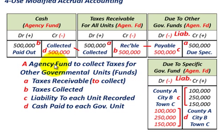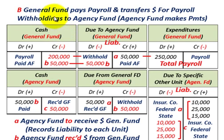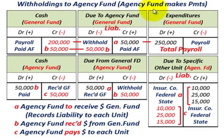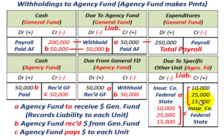We've taken care of the agency fund where it collected taxes for other governmental units. Now let's look at the second case, where the general fund pays out payroll — salaries and wages — and transfers dollars for payroll withholdings to the agency fund, which then makes payments for those withholdings. The withholdings are: insurance company $10,000, federal withholding tax $25,000, and state withholding tax $15,000.